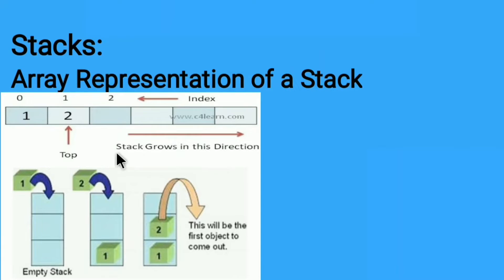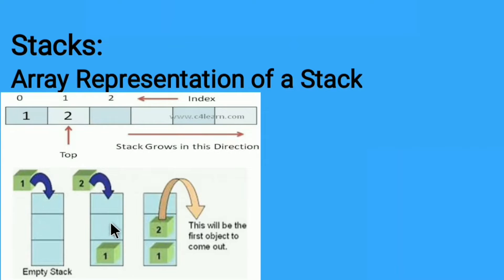The stack grows in this direction. In the diagram below, for the first time there are three elements to be inserted but the array is empty. We add the first element at the bottom. The second element is inserted from the same end — that is the top end. To remove the first element, we must first remove the second element, then we can remove the first. This is how the stack works.